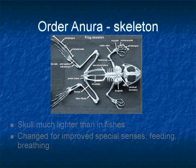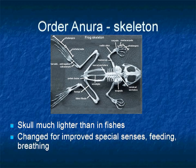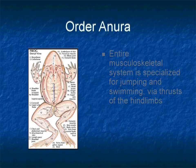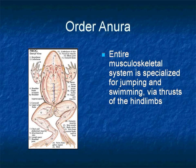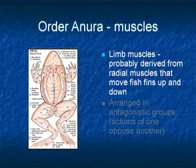The skull of frogs differs from other vertebrates in terms of weight — it is much lighter than in fishes and contains fewer, less ossified bones, thus promoting improvements in special senses, feeding, and breathing. In anurans, the entire musculoskeletal system is specialized for jumping and swimming by the power of their hind limbs. Limb muscles are probably derived from the radial muscles responsible for moving fish fins up and down, though the correspondence with fin musculature remains doubtful due to the complexity of tetrapod limb muscle arrangement.